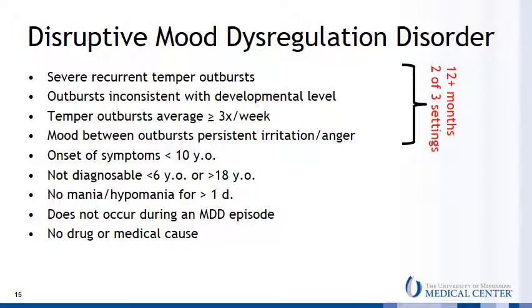DMDD is notable for frequent, severe, recurrent temper outbursts that are inconsistent with the child's developmental level, with mood between outbursts being one of persistent irritability or anger. Remember that on board exams you'll often see questions about the frequency of outbursts, onset of symptoms, and the exclusion range for a diagnosis of DMDD.